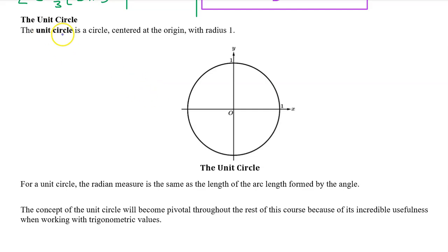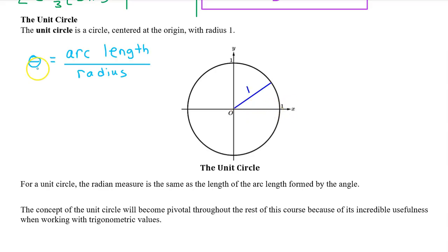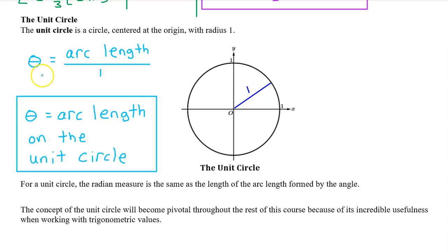The unit circle is a tool used for trigonometry in higher level math. The unit circle is just a circle centered at the origin that has a radius of 1. The radian measure of an angle is the arc length divided by the radius. But on a unit circle, the radius is always 1, so our formula becomes arc length over 1. In other words, on the unit circle, the radian measure of an angle is equal to the arc length.